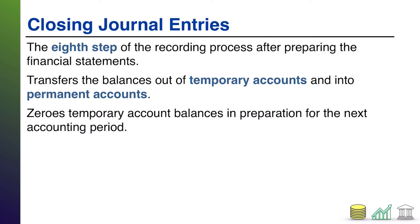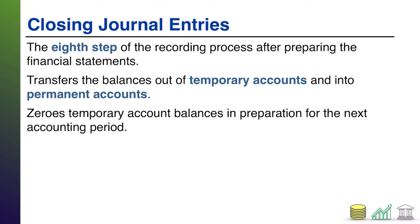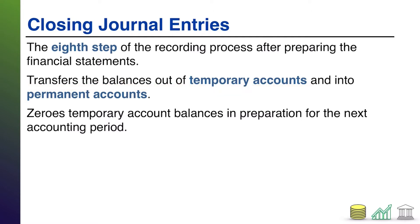What these journal entries do — these are journal entries just like every other journal entry we've seen, like regular journal entries and adjusting journal entries — this is just another set of journal entries that get made. But they serve a very particular purpose: they are going to transfer the balances out of what we call temporary accounts and into what we call permanent accounts.